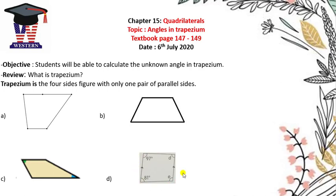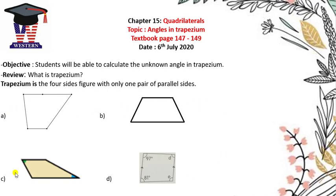Figure D looks like a rhombus or parallelogram, but it is not. It is a trapezium because it is a four-sided figure and we have only one pair of parallel sides. So here are all the trapeziums you will see in your textbook or classwork. Please identify all the shapes that are called trapezium.